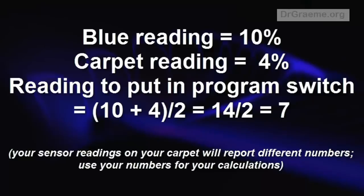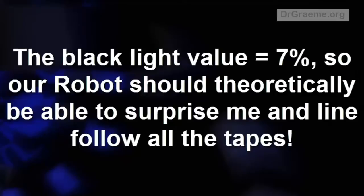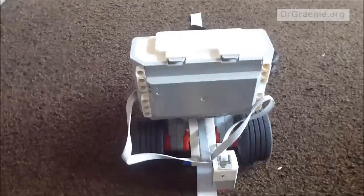The calculation when we go through it gives us a switch value of 7%. So let's put that in our program, download it, and we'll see what happens. But 7% is also the black light value, and it's greater than or equal to 7 for line following. So maybe we'll see black as well. But I'll really be surprised if black works.